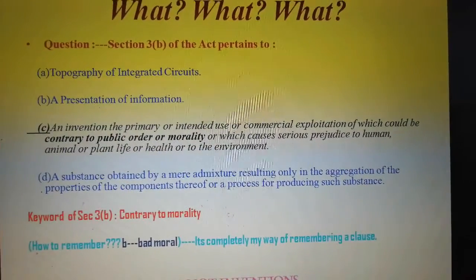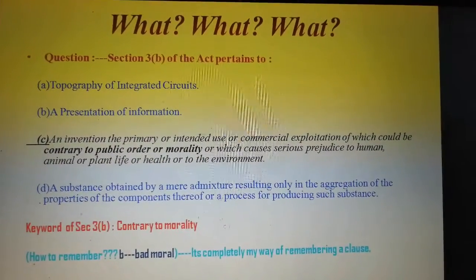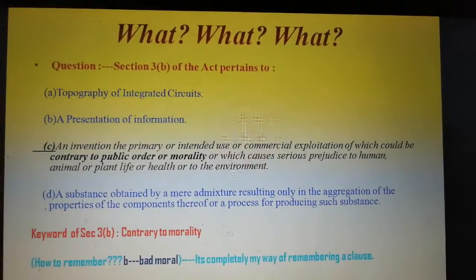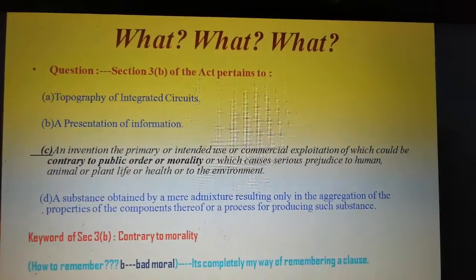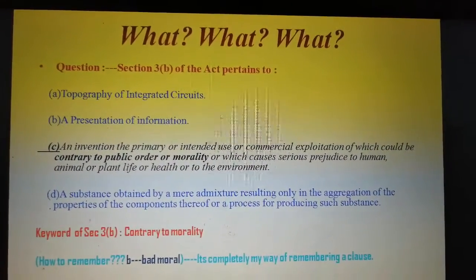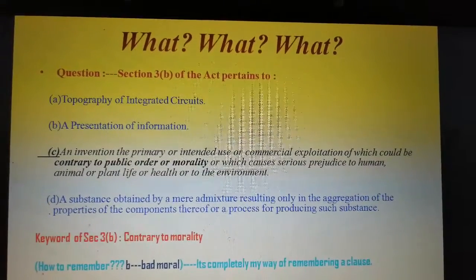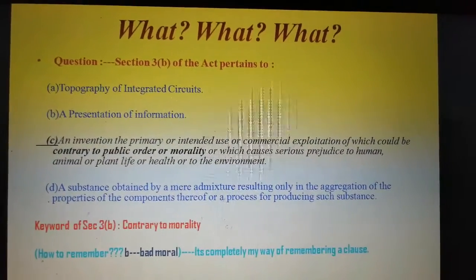Option D is a substance obtained by a mere admixture resulting only in the aggregation of the properties of the components thereof, or a process for producing such substance.